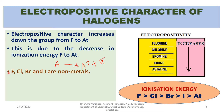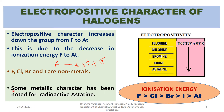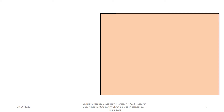Fluorine, chlorine, bromine, and iodine are non-metals. However, some metallic character has been noted for radioactive astatine. Among halogens, astatine is the most electropositive element due to its lower ionization energy. But because astatine is a radioactive element, it has only limited applications. So here we are considering only from fluorine to iodine.